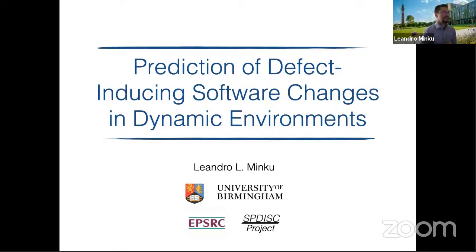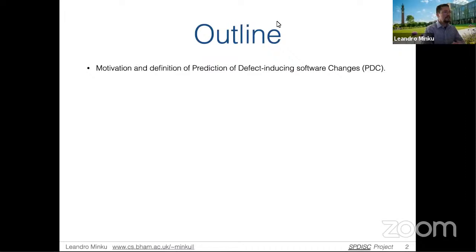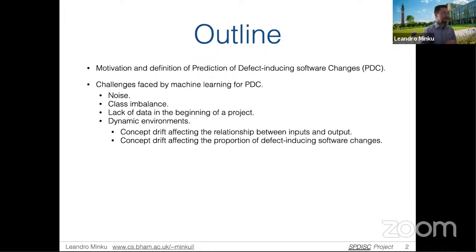Thank you very much, Guilherme, for the very kind introduction. It's a pleasure to be here and discuss with all of you about prediction of defect-inducing software changes in dynamic environments. Here is an outline of my talk. I'm first going to give a motivation and a definition for the problem of predicting defect-inducing software changes, PDC — basically the problem where we want to predict whether a software change is clean or defect-inducing. Then I'm going to talk about the challenges we face when using machine learning for PDC.